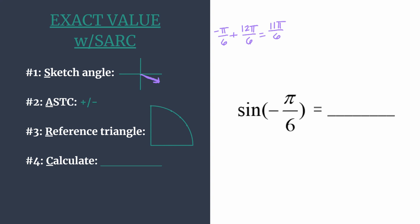So starting in the first and working our way around counterclockwise, all are positive in the first, sine and its reciprocal cosecant are positive in the second, all the other four are negative, tangent and cotangent are positive in the third, and cosine and its reciprocal secant are going to be positive in the fourth.